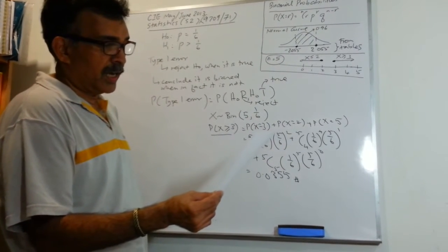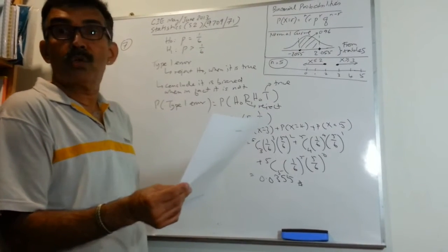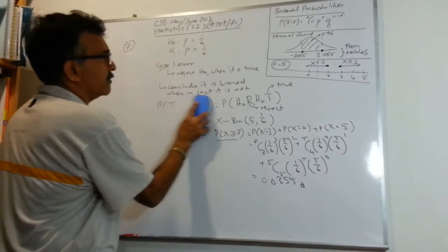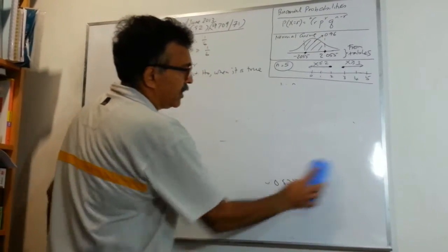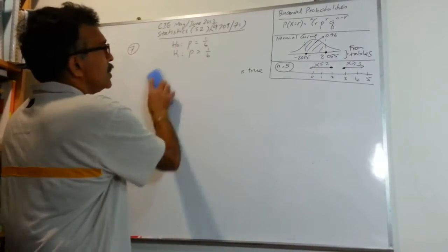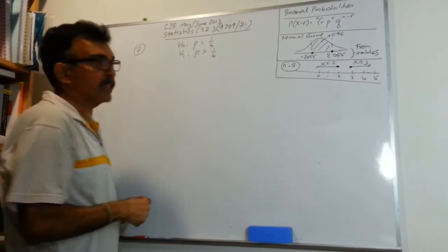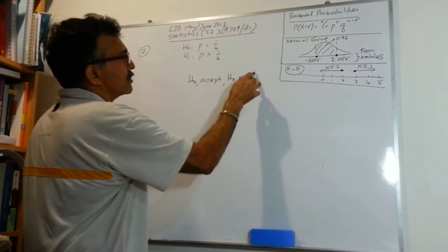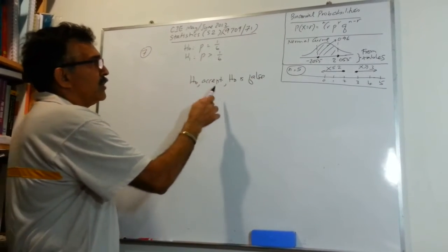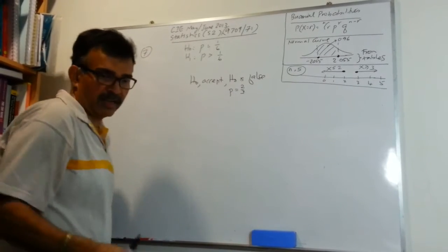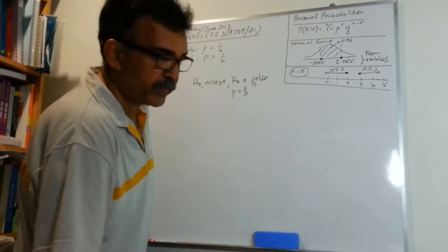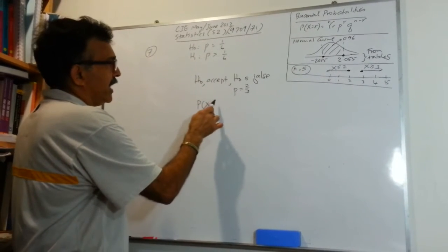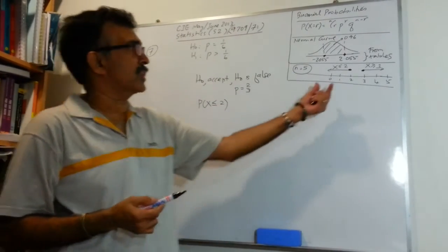That gives you three points. Moving on to part 2: assuming that the value of P is actually 2 over 3, you are asked to calculate the probability of a type two error. A type two error happens when you accept H0 and H0 is false. Since the rejection region is X ≥ 3, you accept H0 when X is less than or equal to 2 — that is the acceptance region from our picture.